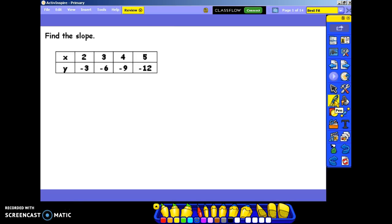Alright, find the slope. We have to take the change in the y, negative 6 minus negative 3, over the change in the x's. When I subtract, I have to keep the first number, change subtraction to addition, take the opposite of the second number. Negative 6 plus 3 is negative 3. 3 minus 2 is 1, so my slope is negative 3.